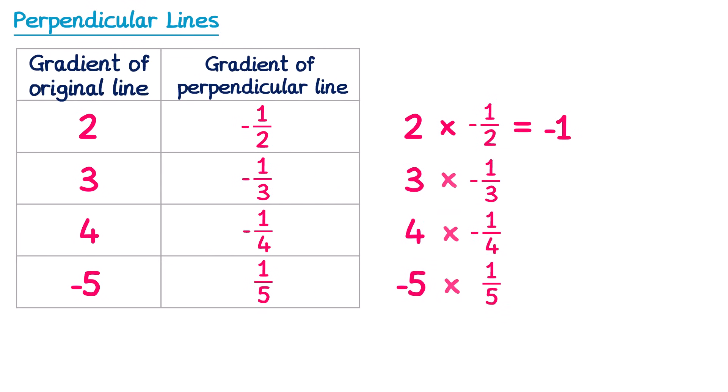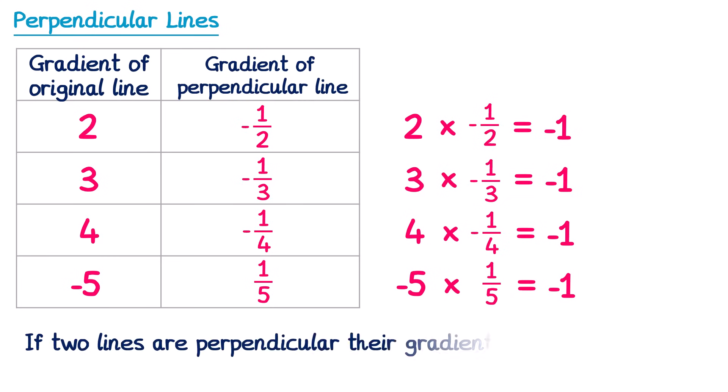This applies to all of these pairs: 3 times negative one third is negative 1; the same for 4 times negative one quarter, and also negative 5 times one fifth. This tells us that if two lines are perpendicular, their gradients multiply to give negative 1.